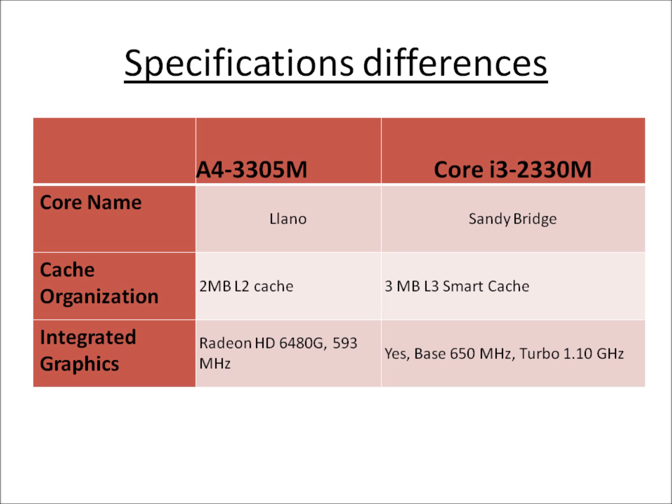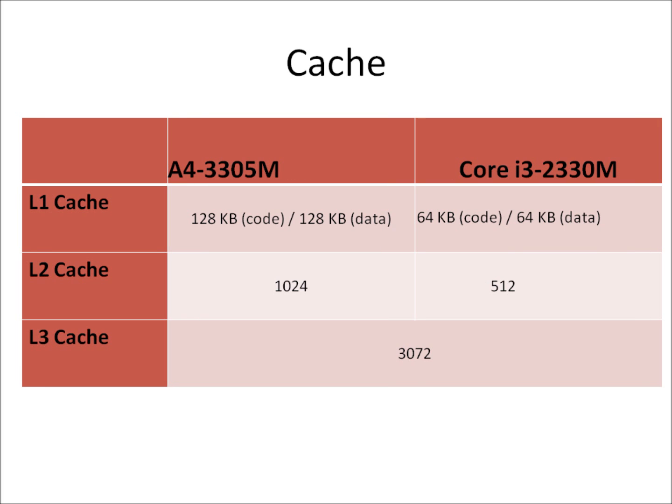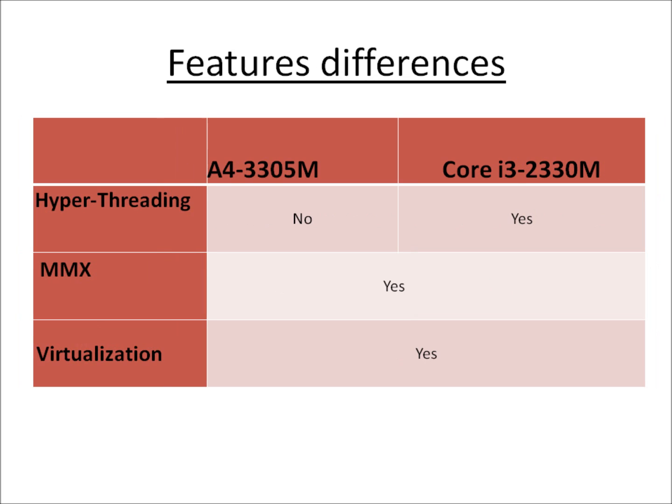The cache organization puts Core i3 slightly higher, but integrated graphics however is better in the A4-3305. So if you are looking for better integrated graphics performance, you might want to side with the A4-3305.